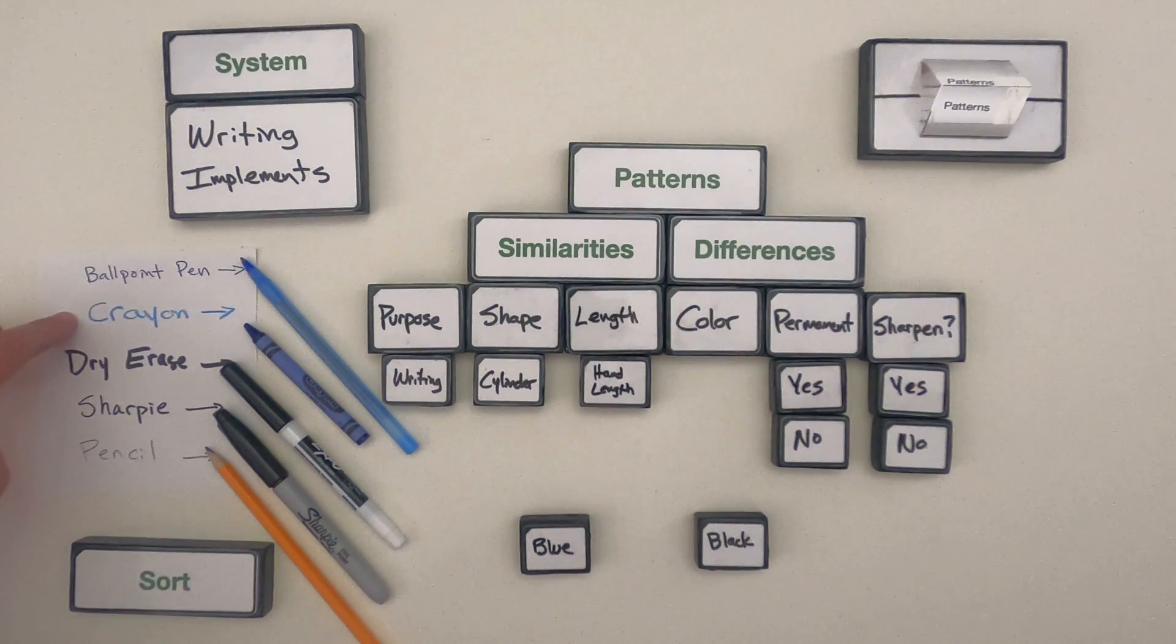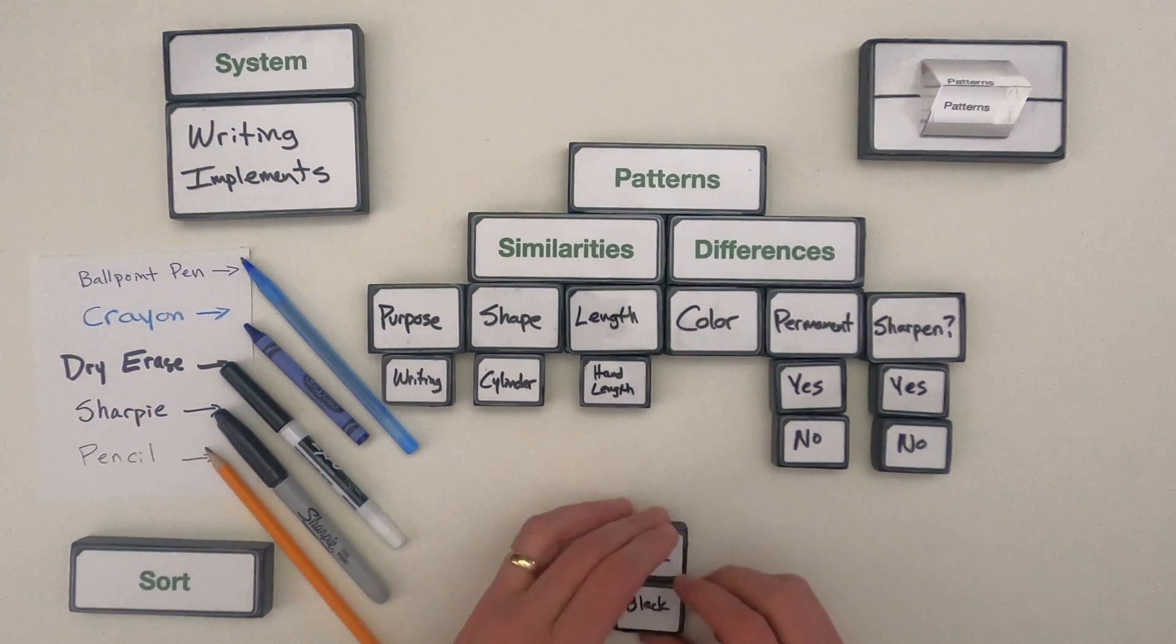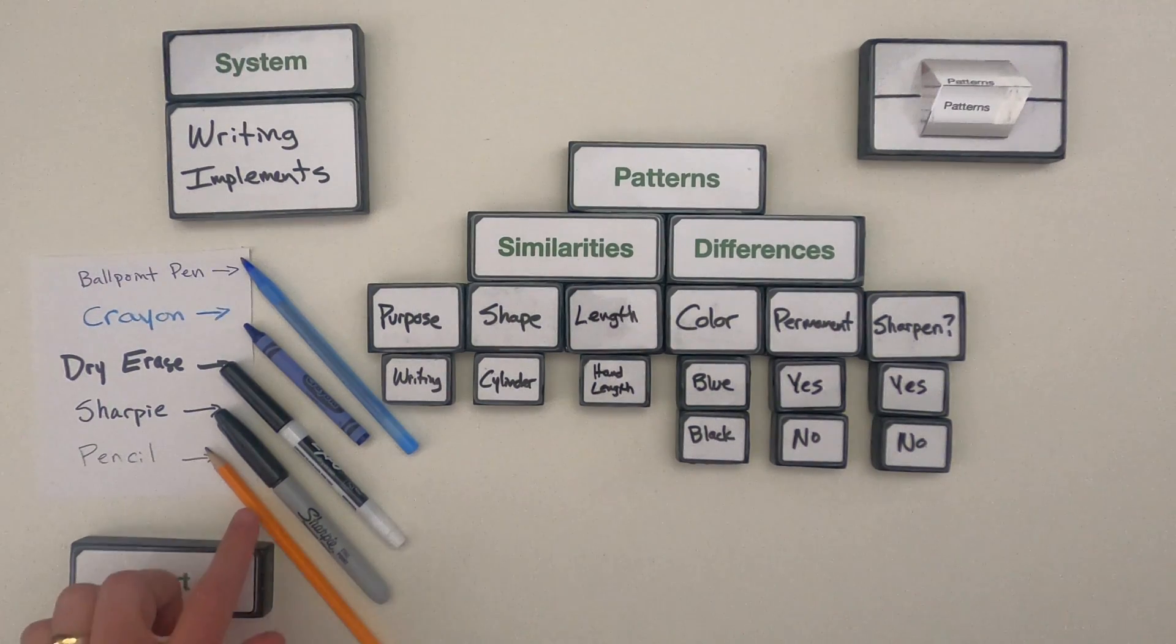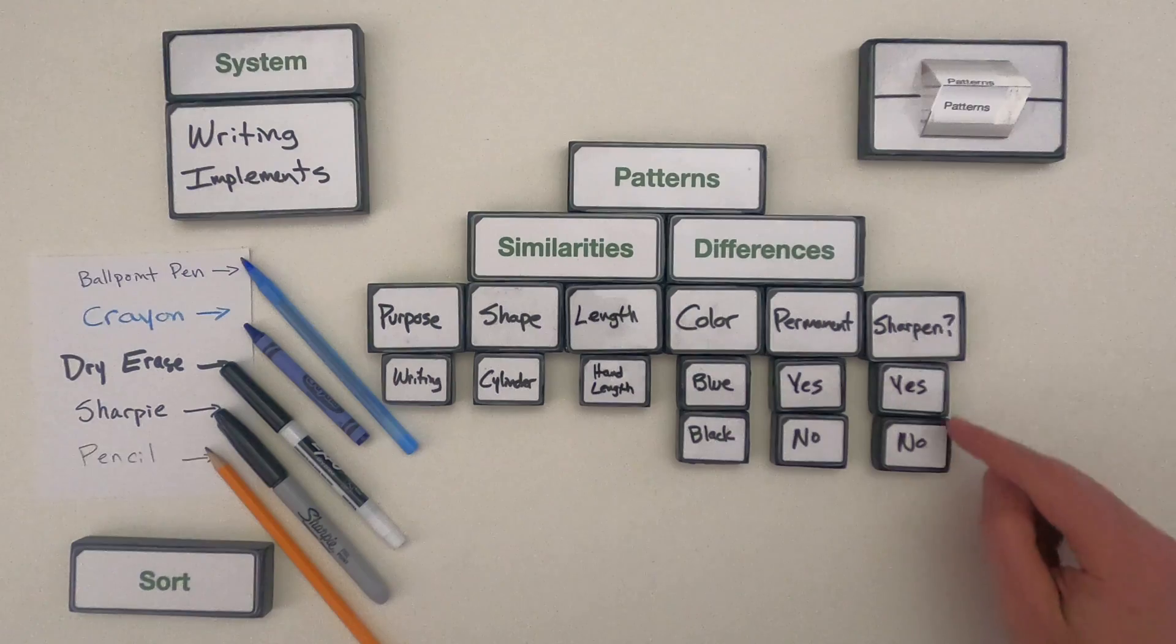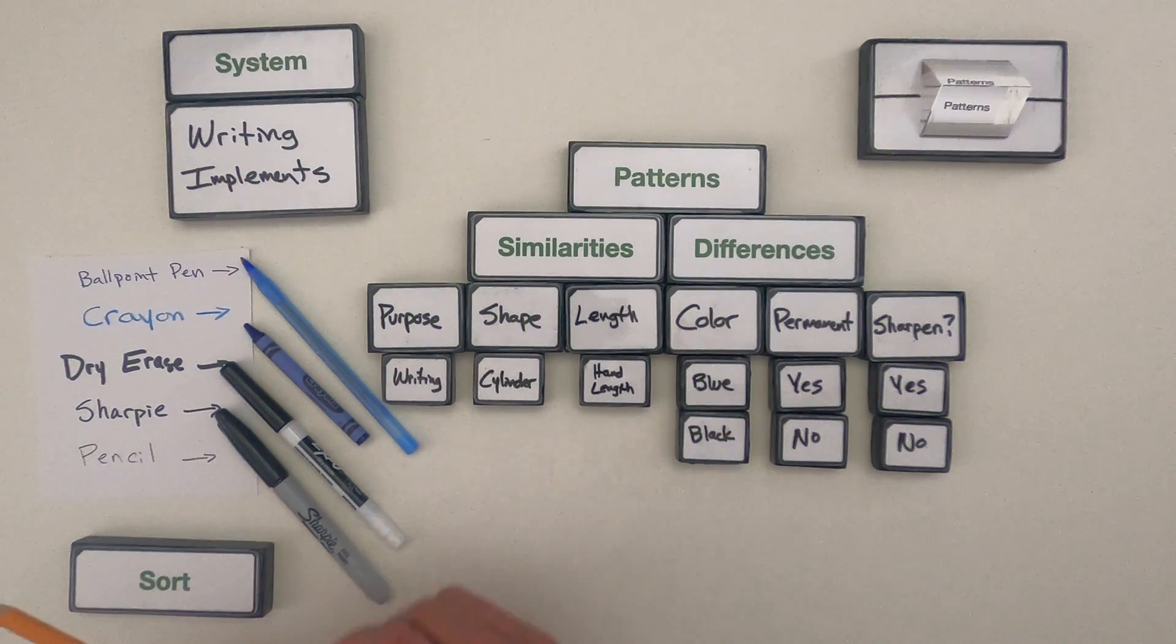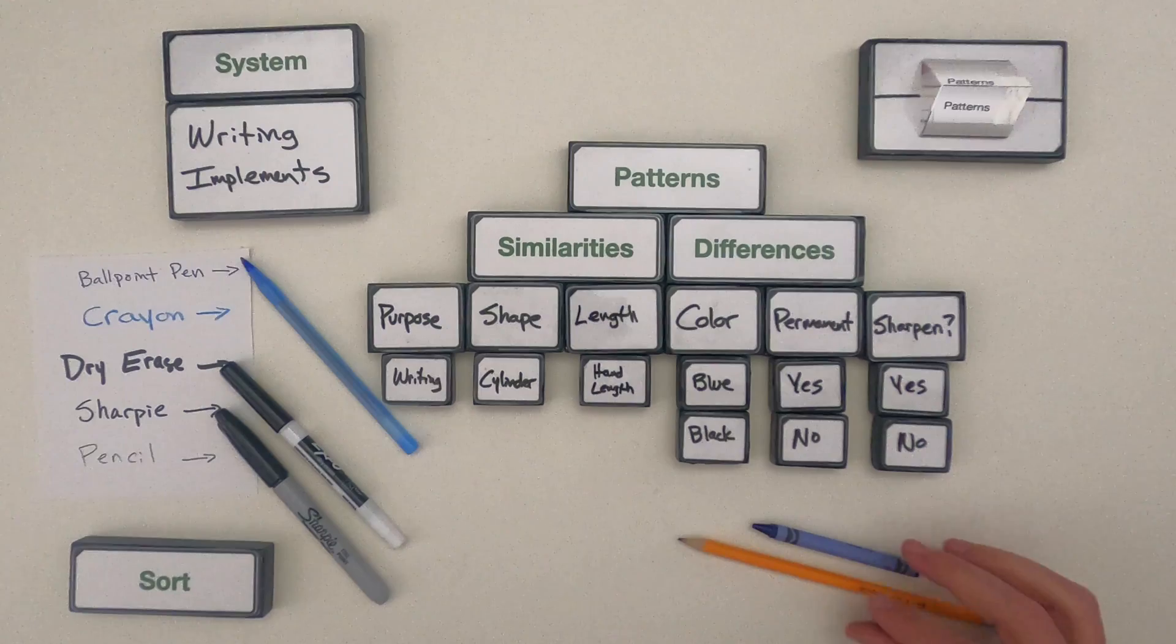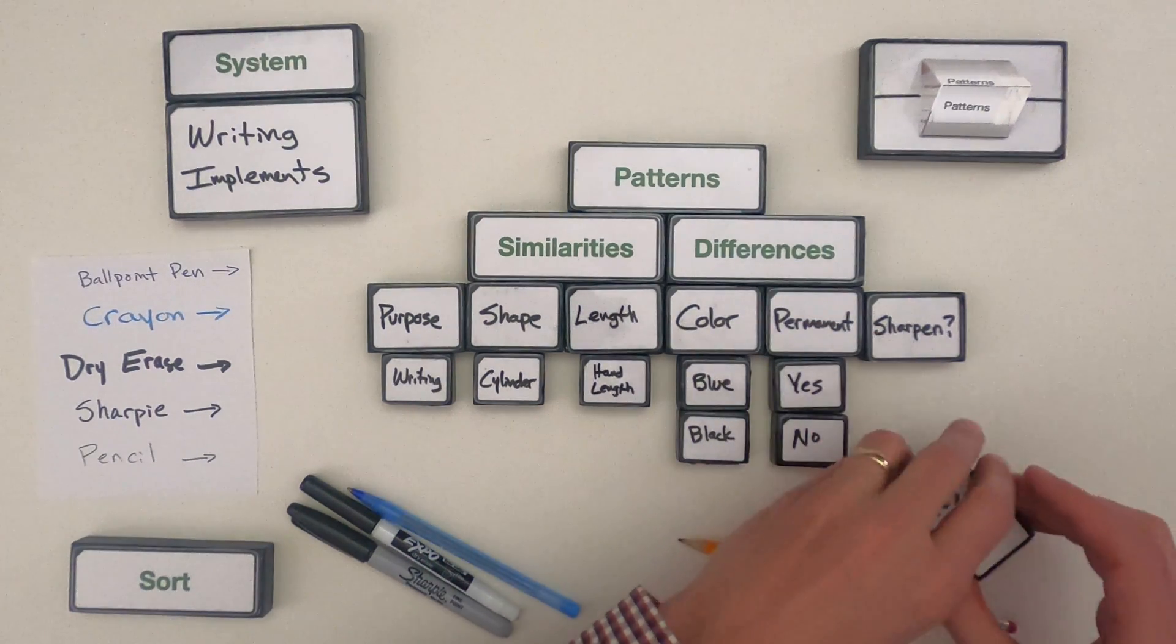We could also look at their permanency. So I would say the ones that aren't permanent would be the pencil and the dry erase marker. And then can you sharpen it? So a pencil and a crayon can both be sharpened. So I could sort those into things that can be sharpened. And then these other ones are not going to be sharpened.